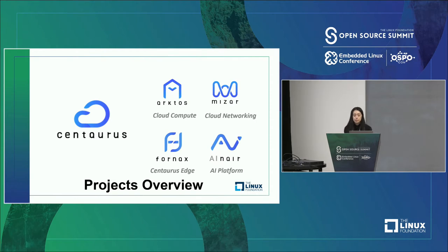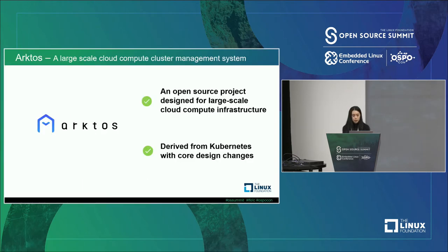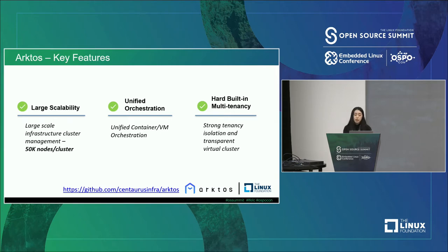With those challenges in mind, I'd like to give a high-level description of each sub-project. The first is Arctos — an open-source project designed for large-scale cloud compute infrastructure, derived from Kubernetes with core design changes. Arctos aims to address key challenges from large-scale cloud. Key features include large scalability: Arctos can now support cluster management of 50,000 nodes per cluster, with an eventual goal of 300,000 nodes in one single regional control plane. The next feature is unified orchestration for VM and container — a pod can contain multiple containers or one VM, scheduled the same way in the same resource pool, enabling cloud providers to use a single converged stack.